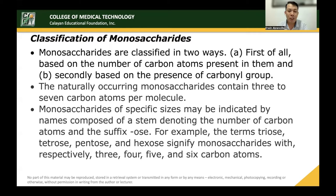The naturally occurring monosaccharides contain 3 to 7 carbon atoms per molecule. Monosaccharides of specific sizes may be indicated by names composed of a stem denoting the number of carbon atoms with the suffix -ose, which signifies sugar. For example, the terms triose, tetrose, pentose, and hexose signify monosaccharides with 3, 4, 5, and 6 carbon atoms respectively. Heptose has 7 carbon atoms.